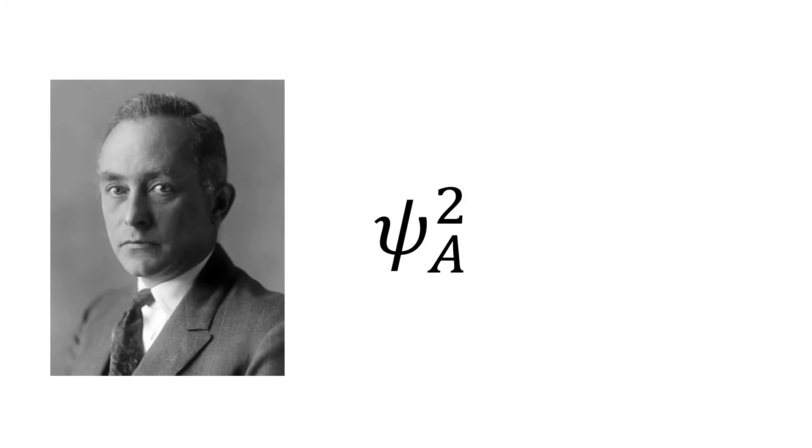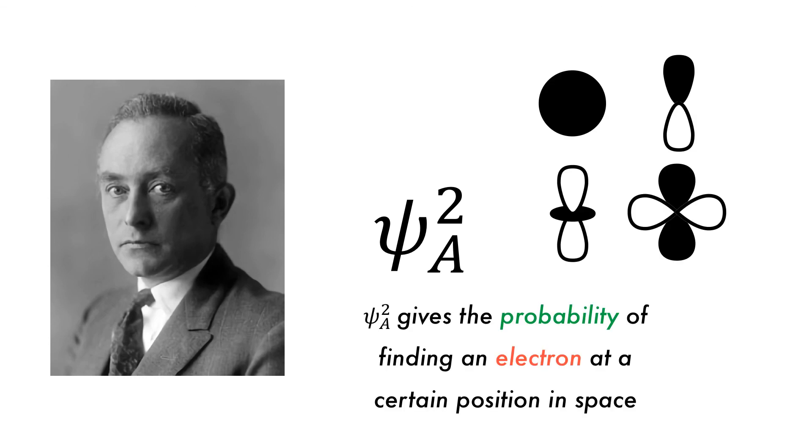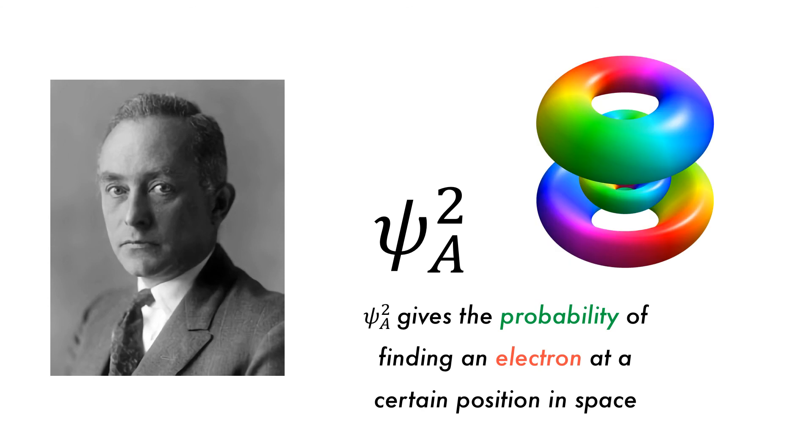Based on this, Max Born suggested that the wave function could be interpreted as a probability amplitude, and the square of the wave function would tell us the probability of finding an electron at a particular point in space.